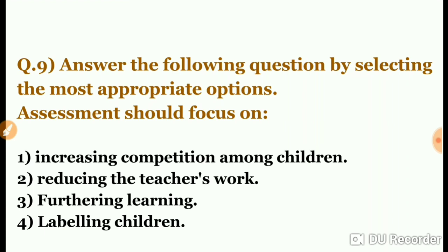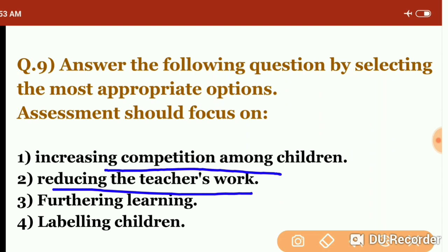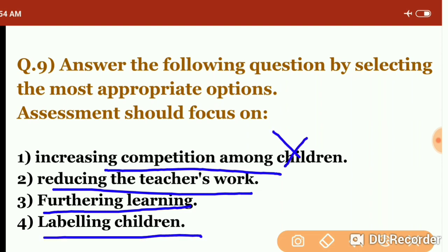Question nine: assessment should focus on — increasing competition among children; reducing the teacher's work; furthering learning; or labeling children. Competition is not the focus, reducing teacher's work is not the main motive, and labeling is absolutely not the goal. Assessment's focus should be on furthering learning — helping students improve through a diagnostic approach. So the answer is the third option.